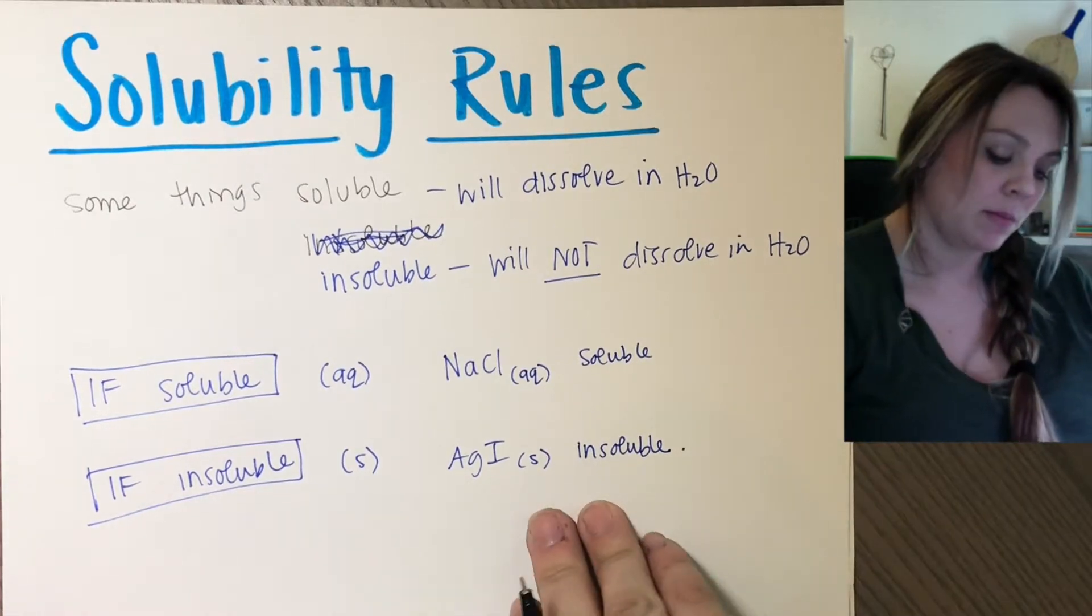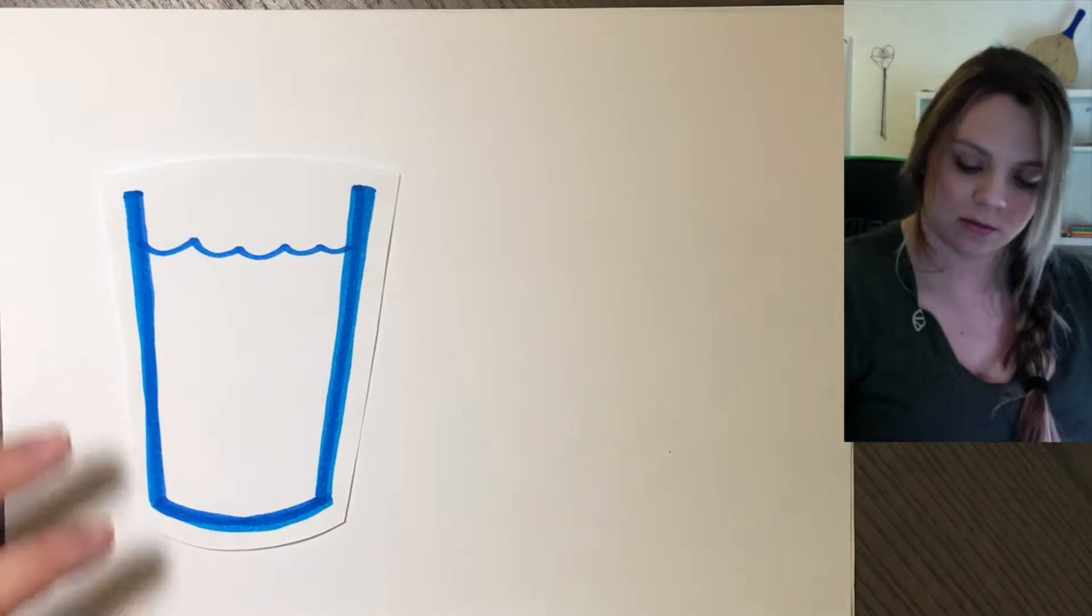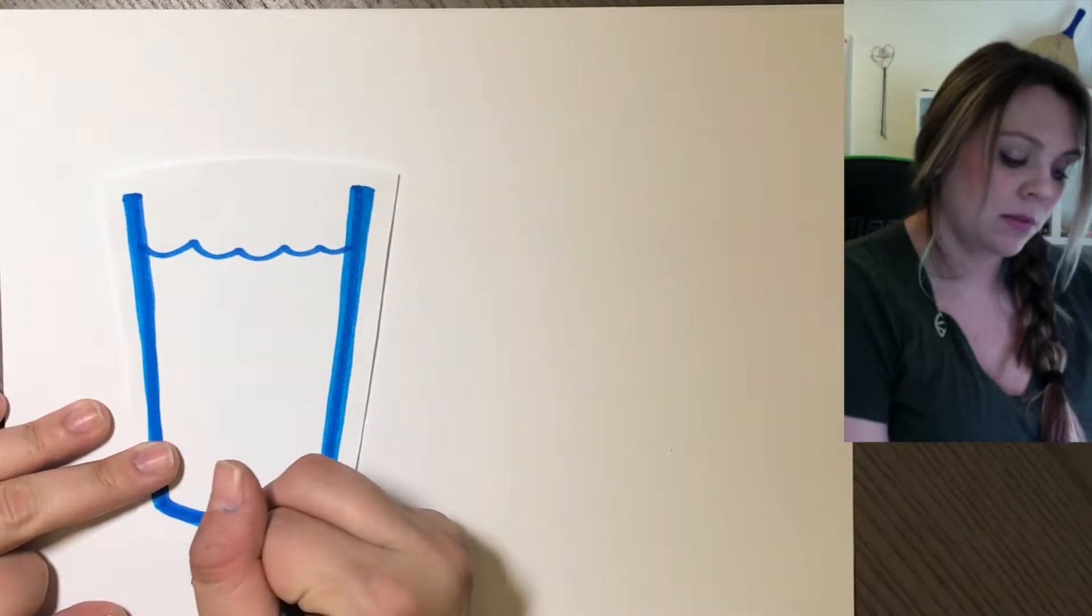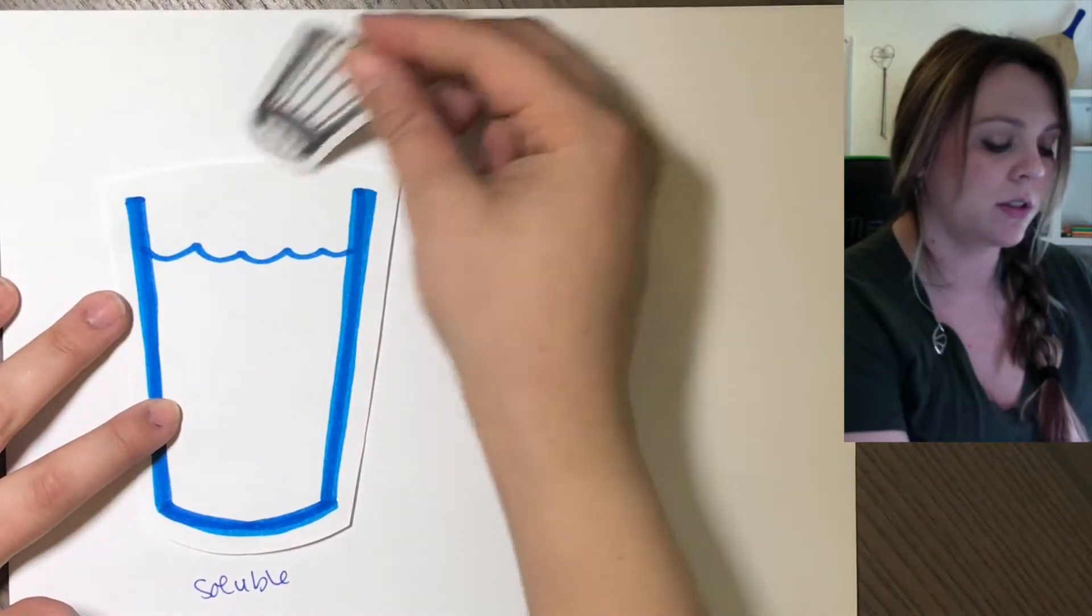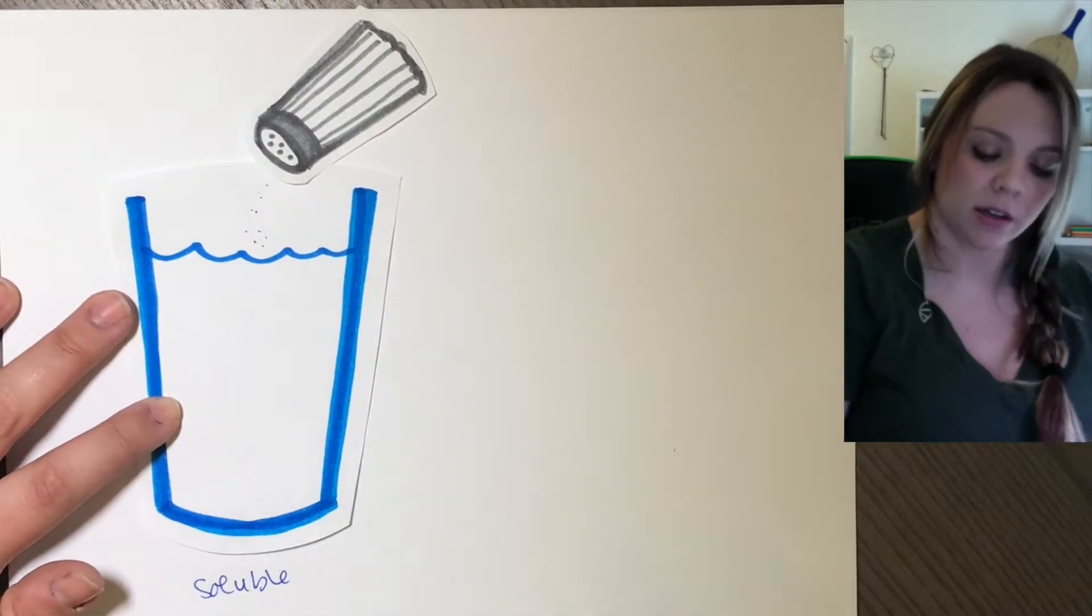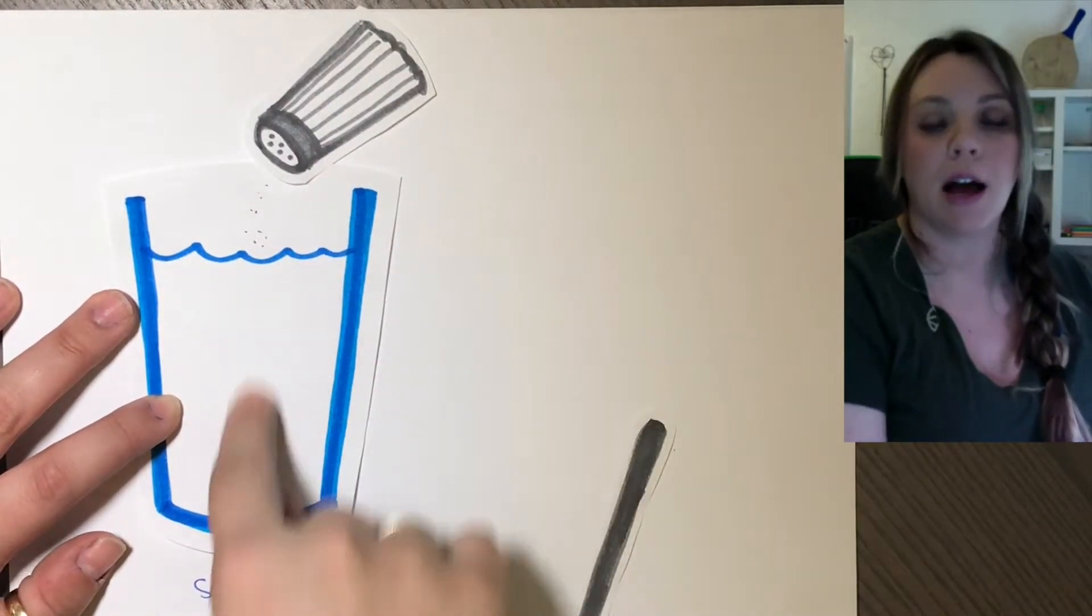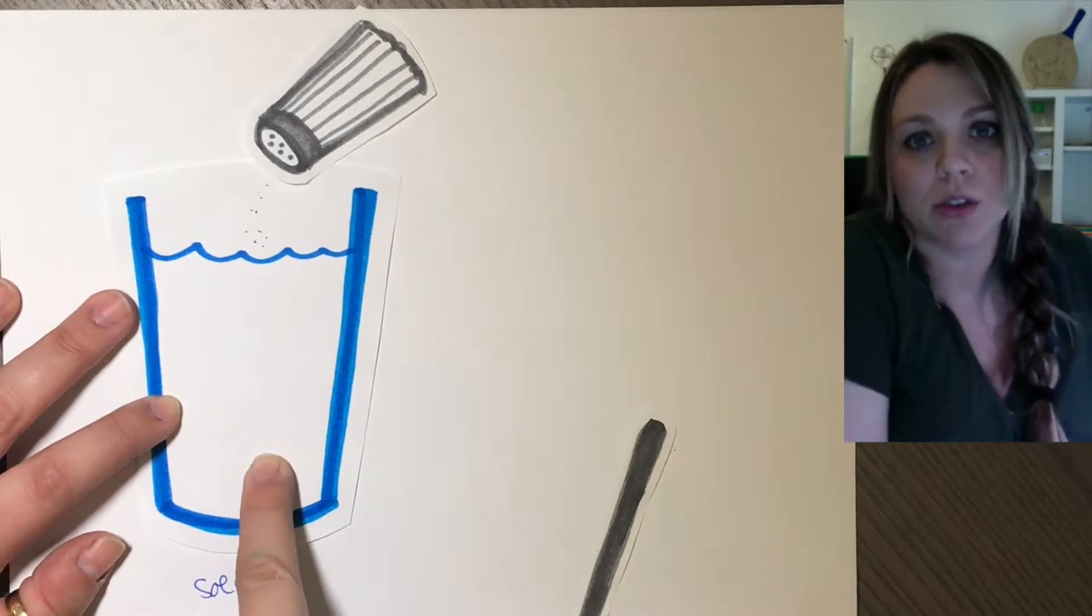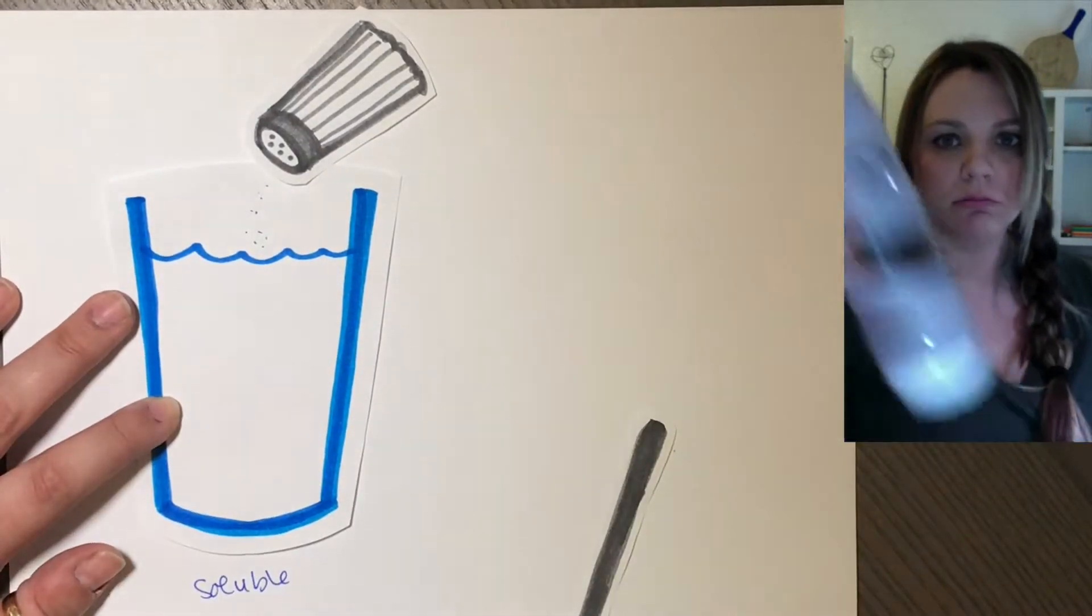So you can actually see this, like you can look at this in the lab if you had a beaker of water and it was something that's soluble that you're adding. So if I have my lovely little salt shaker and I'm adding salt to it, if I add salt into the water and then I stir it up, I won't be able to see anything. The salt will dissolve. It'll just look like regular water. Salt water looks like regular water. It just looks like clear water.